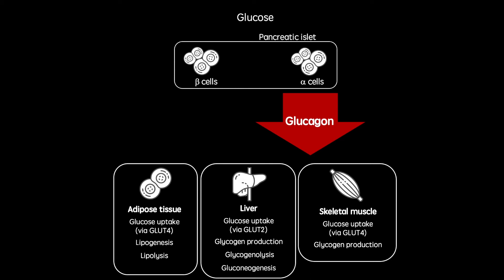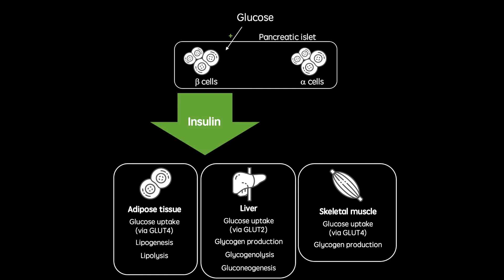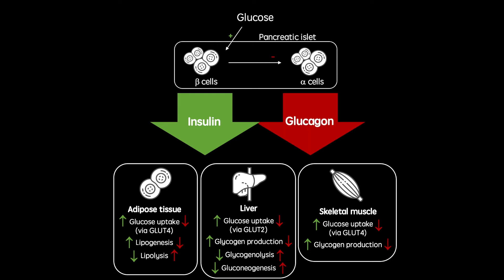When glucose is being absorbed from the gastrointestinal tract, usually shortly after a meal, beta cells are stimulated to secrete insulin. As well as inhibiting the secretion of glucagon and therefore inhibiting all of its effects, insulin acts in a large variety of tissues, all working to reduce blood glucose concentration. These effects include increasing glucose uptake, as well as increasing the production of storage molecules.